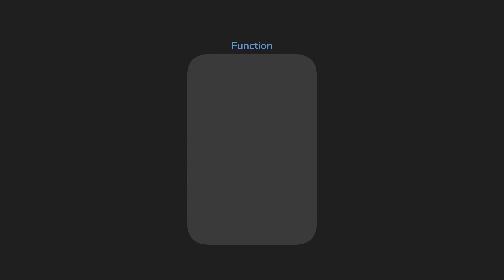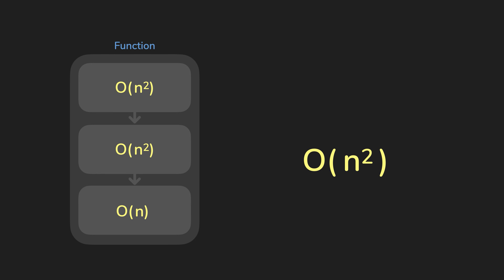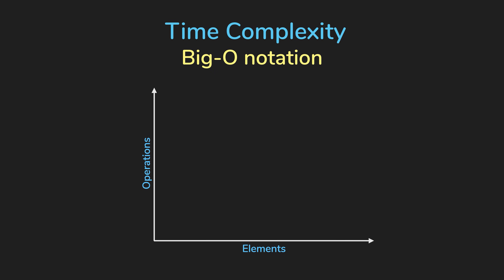When figuring out the big O of an algorithm, we also need to drop the non-dominant terms. For example, if a function has three sequential parts — the first two have O(N²) and the third is O(N) — you might think it's O(2N² + N). But this function is actually just O(N²). First, we drop the constants and coefficients. Then we only choose the highest order term and drop the rest. So it's just O(N²).